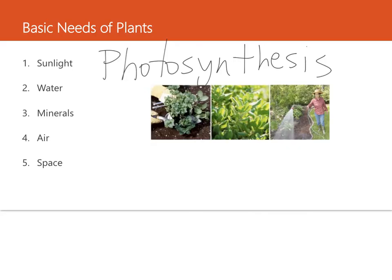So that's sunlight, and the green stuff that converts all of that sunlight energy and water and air into food is the chlorophyll. It happens in the leaf of a plant. It's called photosynthesis.